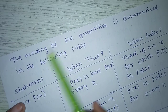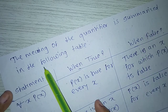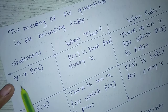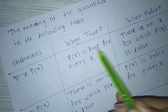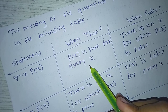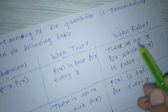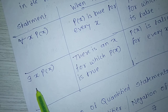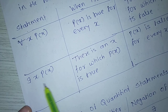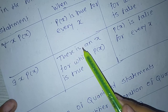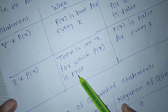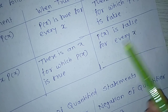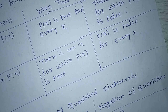The meaning of quantifiers is summarized in the following table. For the statement ∀x P(x): it is true when P(x) is true for every x, and false when there is an x for which P(x) is false. For the statement ∃x P(x): it is true when there is an x for which P(x) is true, and false when P(x) is false for every x.